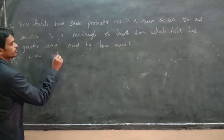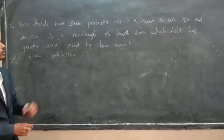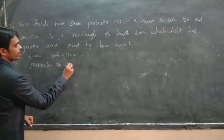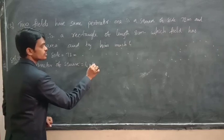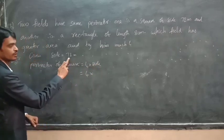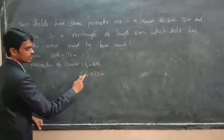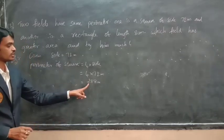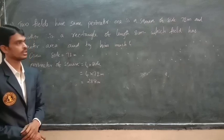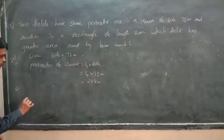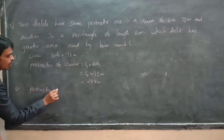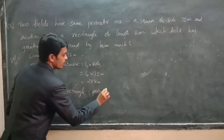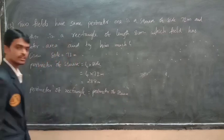Perimeter of square equals 4 into side equals 4 into 72 meters. Calculating: 4 times 72 equals 288 meters. Since both fields have the same perimeter, perimeter of rectangle equals perimeter of square, which is 288 meters.